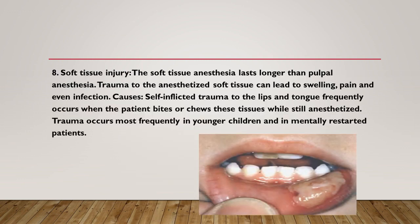Another complication is soft tissue injury. Soft tissue anesthesia lasts longer than pulpal anesthesia, so trauma to the anesthetized soft tissue can lead to swelling, pain, and even infection. Self-inflicted trauma to the lips and tongue frequently occurs when the patient bites or chews these tissues while still anesthetized. Prevention: a local anesthetic of appropriate duration should be selected, a cotton roll can be placed between the lip and the teeth, and warn the patient against drinking hot fluids and biting the lips or tongue.